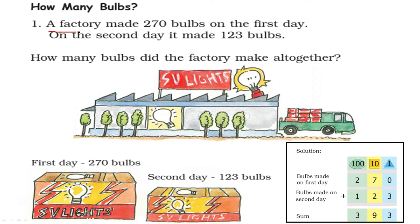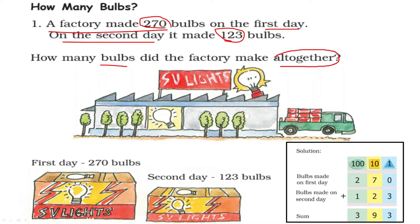Question 1. A factory made 270 bulbs on the first day. On the second day it made 123 bulbs. Question 1: How many bulbs did the factory make altogether? Altogether means we have to add. So the numbers given are: first day it made 270.